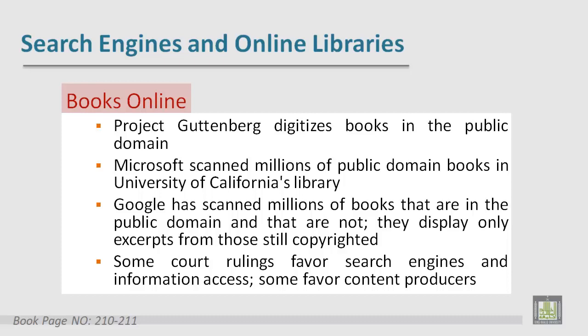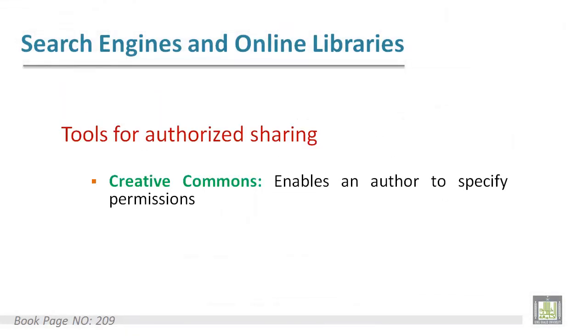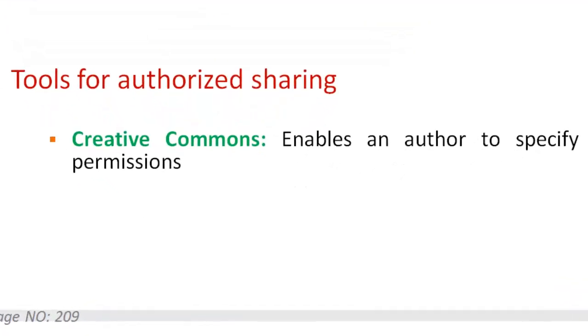Microsoft scanned millions of public domain books in the University of California's library. Google has scanned millions of books that are in the public domain and that are not — they display only excerpts from those still copyrighted. Some court rulings favor search engines and information access, some favor content producers.